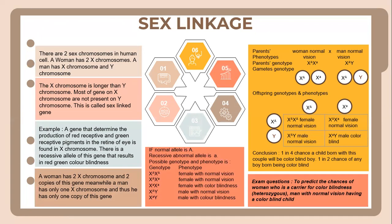There is a recessive allele of this gene that results in red-green colorblindness. If the normal allele is A (capital), the recessive abnormal allele is a (small). These are the possible genotypes and phenotypes.